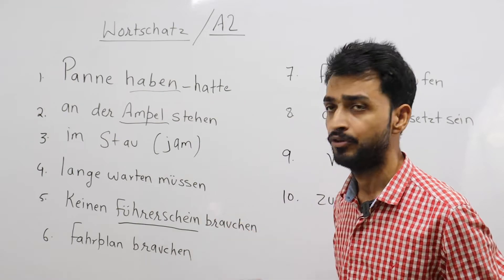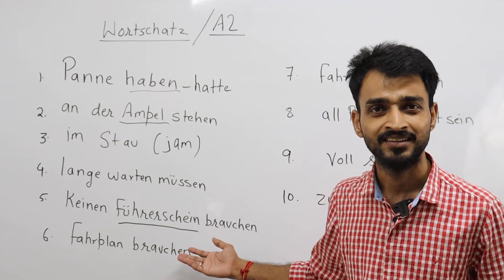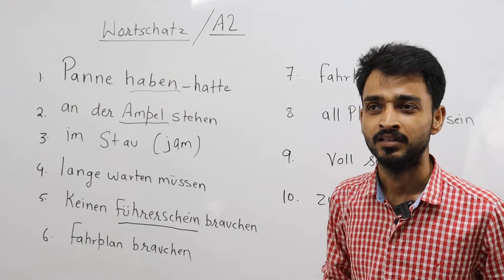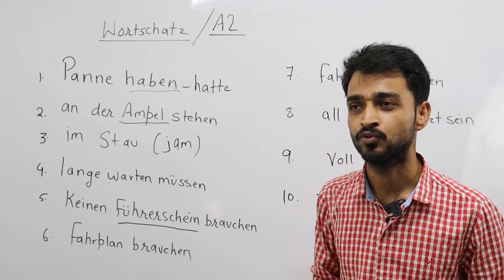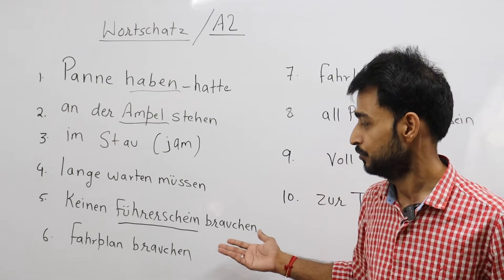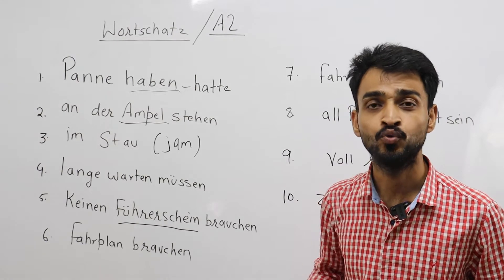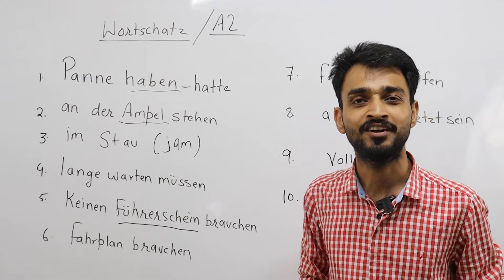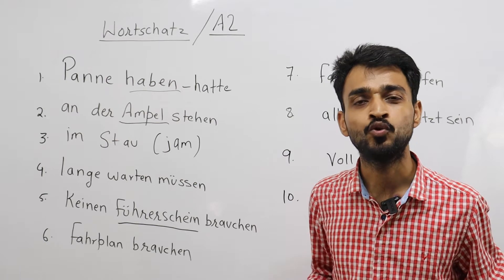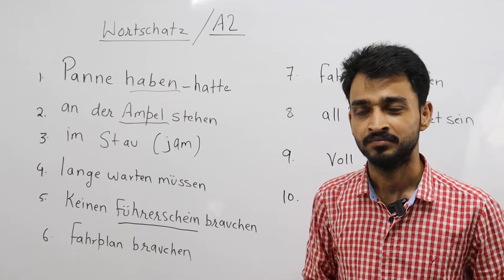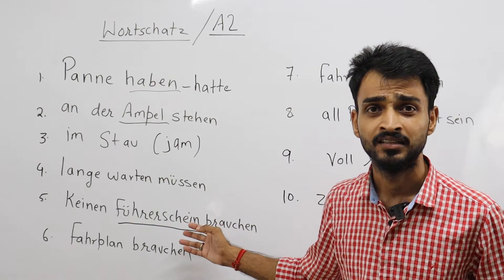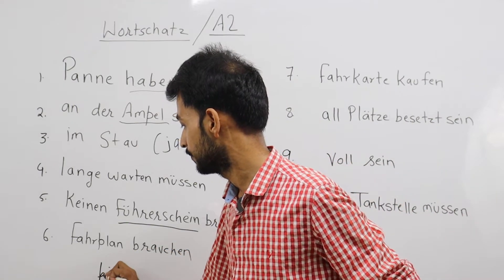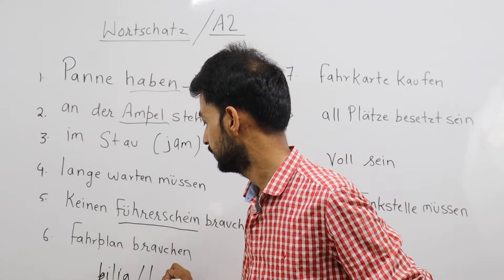'Ich fahre mit dem Auto, ich möchte nicht lange warten, ich muss nicht lange warten' - I don't have to wait at all. Because 'ich fahre mit dem Auto.' Next: 'keinen Führerschein brauchen' - Führerschein means driving license. When you travel by public transport you don't need a Führerschein. 'Ich brauche keinen Führerschein' - this point is in favor of public transport. I prefer to travel by bus or train because I don't need a driving license.